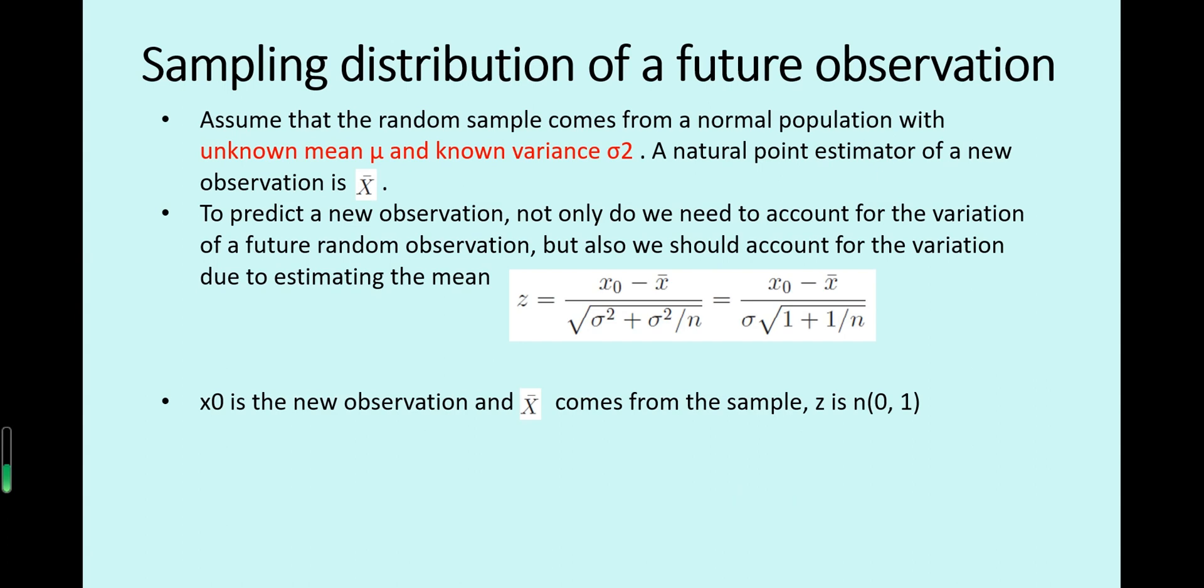You have estimated the parameters and you want to make a prediction for future observation because each time you will get different observations in the prediction. So this is called the prediction interval. This also has a distribution, right?